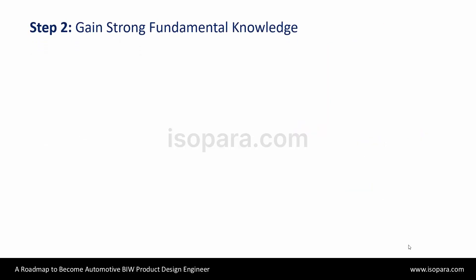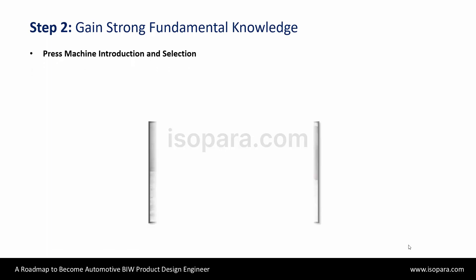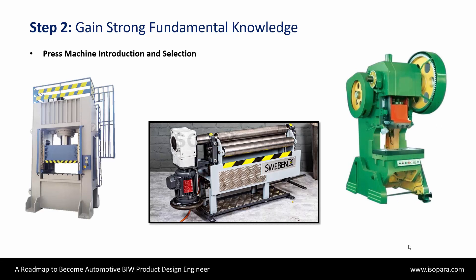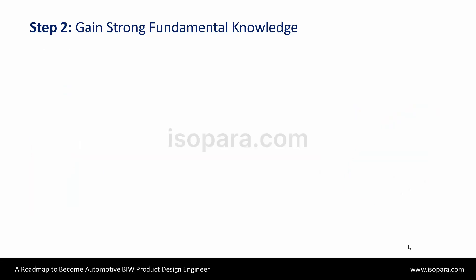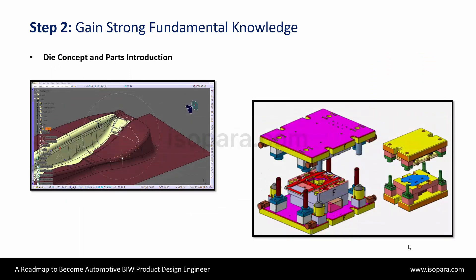Now let's move towards Step 2. Here, you have to learn about the different types of press machines available and how to choose them for a BIW part. You will see what are the die concepts and parting surface. You will understand how the BIW parts get manufactured, the kind of tool which is developed, how that tool works, and how it will be used in the press tool — all covered in this die concept and part introduction.